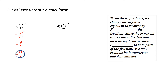For d: 1 half to the negative fourth. Get rid of the negative exponent by taking the reciprocal of the fraction. Then apply the exponent to both bases to remove the brackets. 2 to the fourth is 16; 1 to the fourth is 1. So 16 divided by 1 is 16 — that's the final answer. To summarize: change the negative exponent to positive by flipping the fraction, then apply the exponent to both the numerator and the denominator.